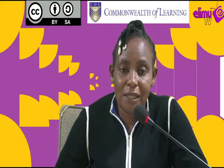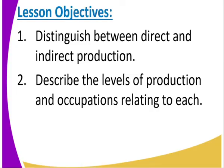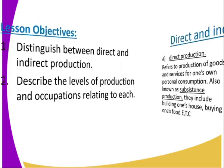Now let us look at the lesson objectives. We are going to distinguish between direct and indirect production, then describe the levels of production and occupation relating to each.